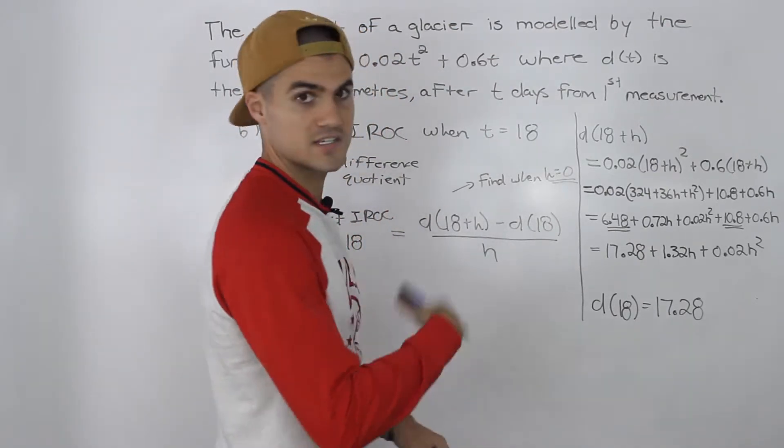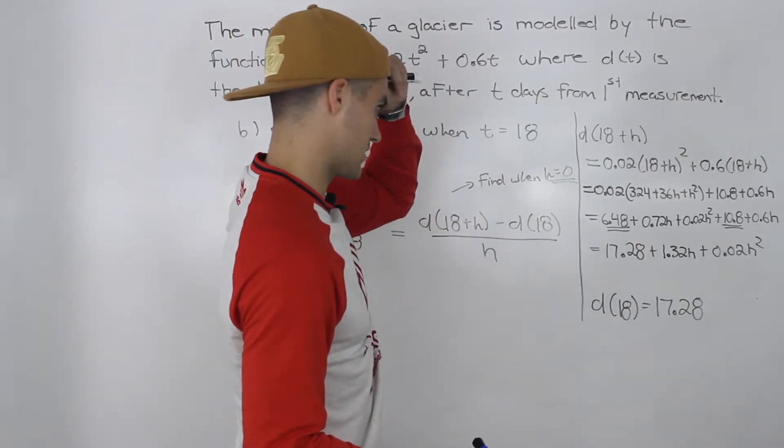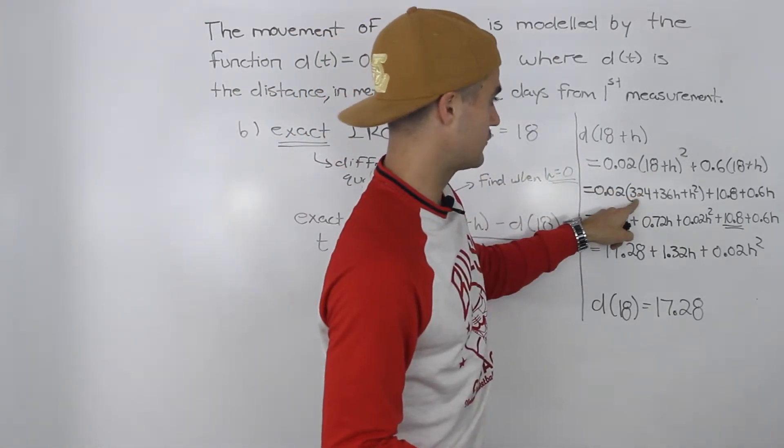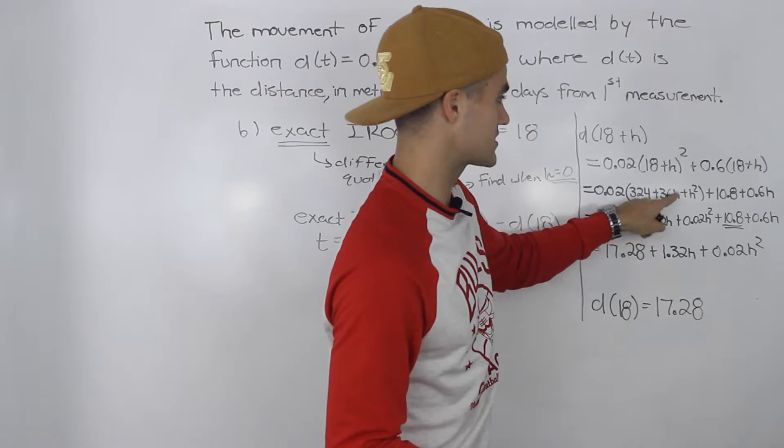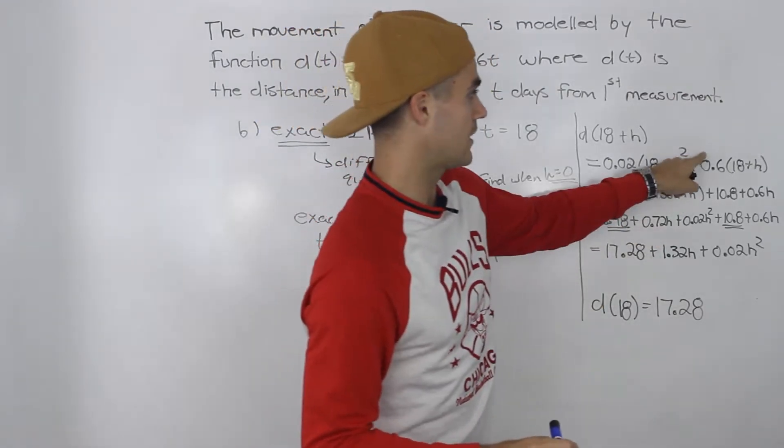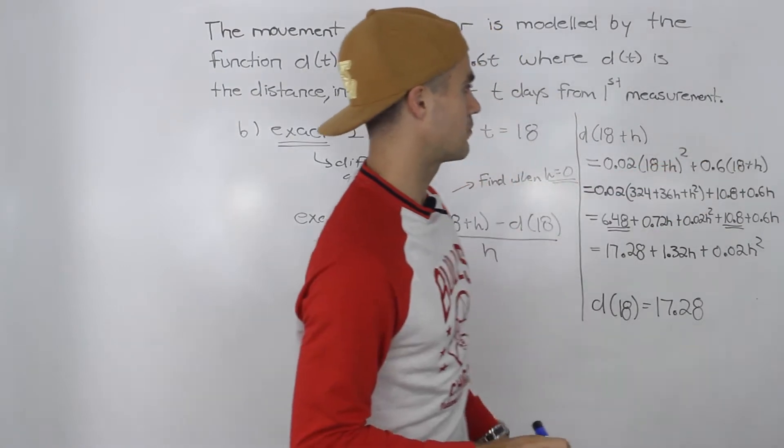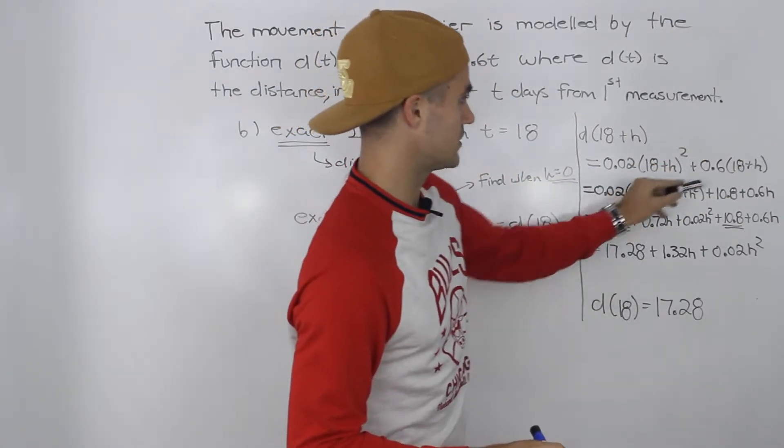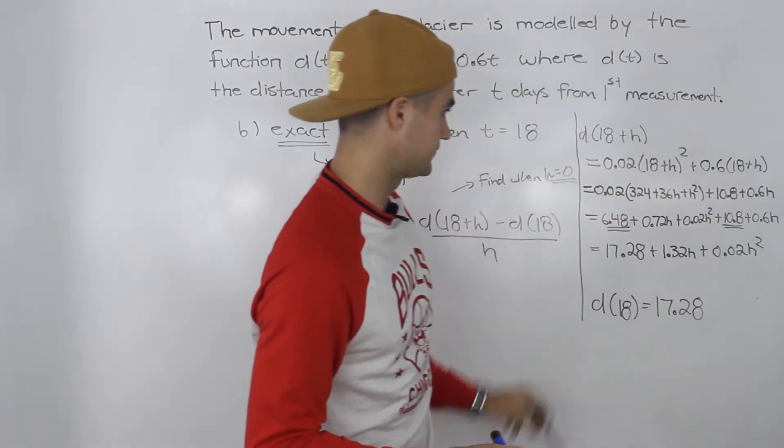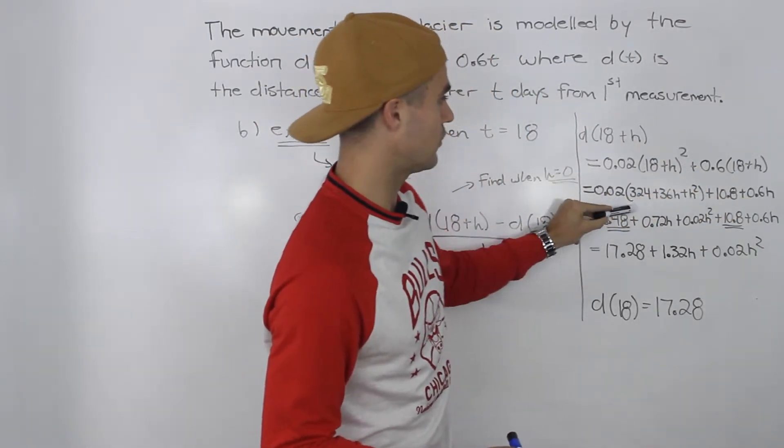Then you have to simplify all of this. So (18+h)² simplifies to 324 + 36h + h². Remember to FOIL it out. Then we can distribute that 0.6 inside the bracket: 0.6 times 18 is 10.8, 0.6 times h is 0.6h.